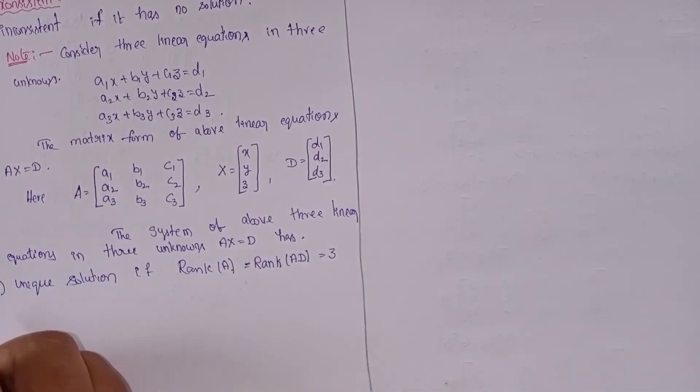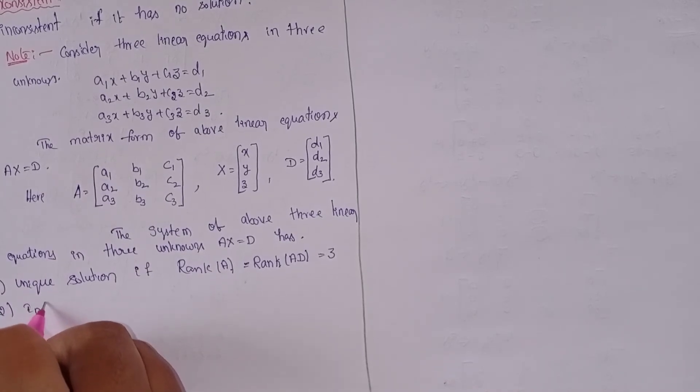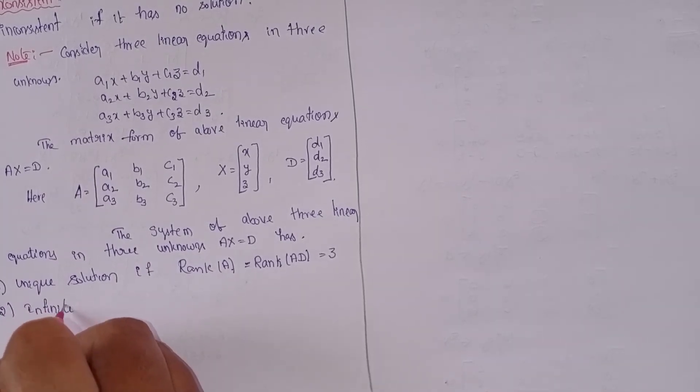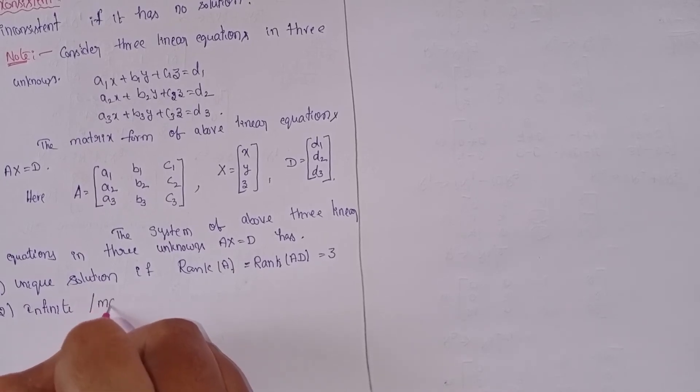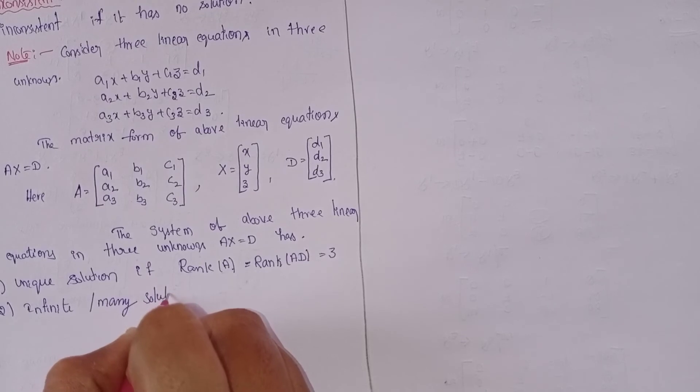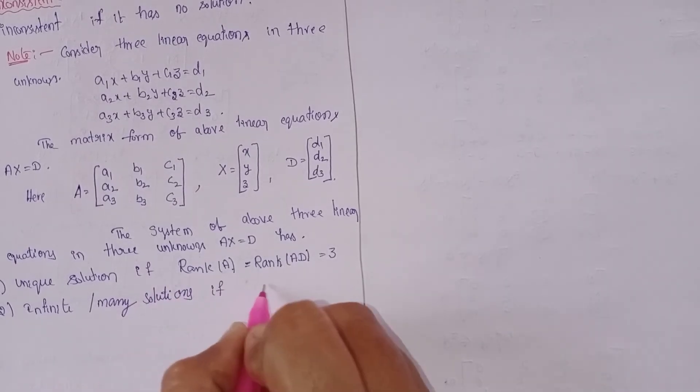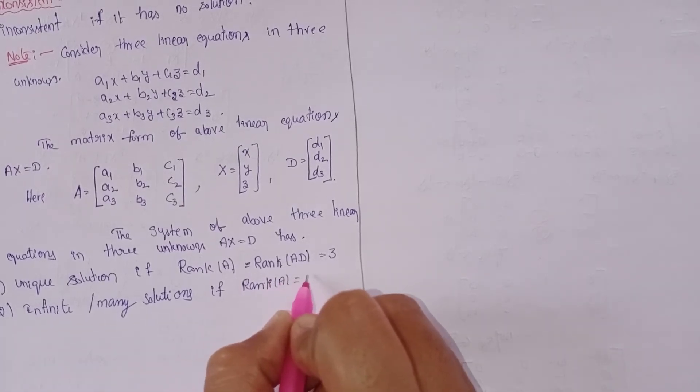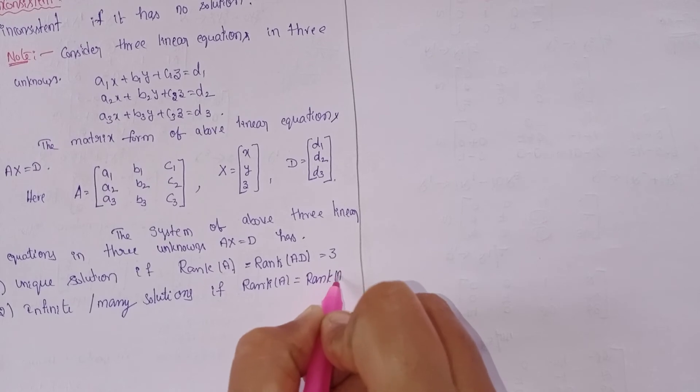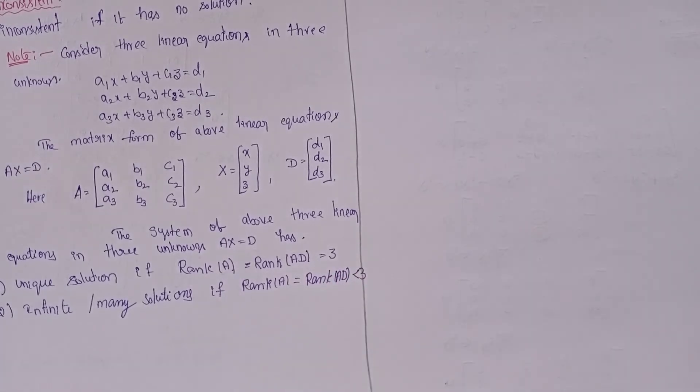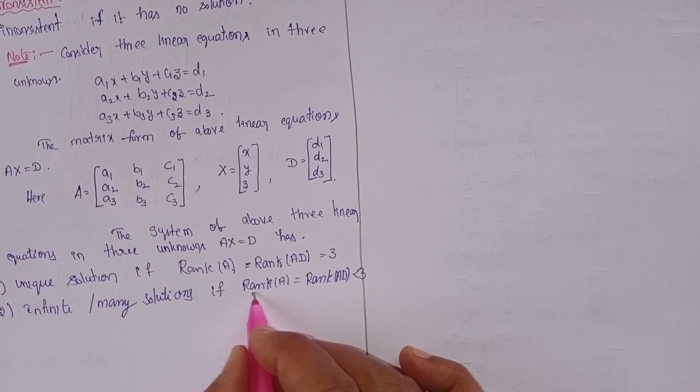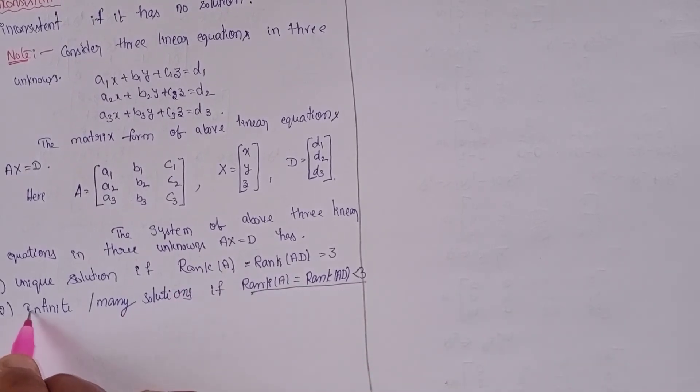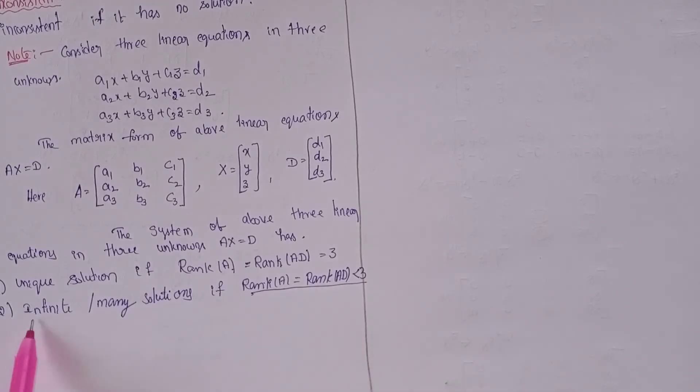Second point: infinite or many solutions. Condition: if rank A equal to rank of (A, D) is less than three. When rank A equal to rank (A, D) is less than three, the solutions are many or infinite.